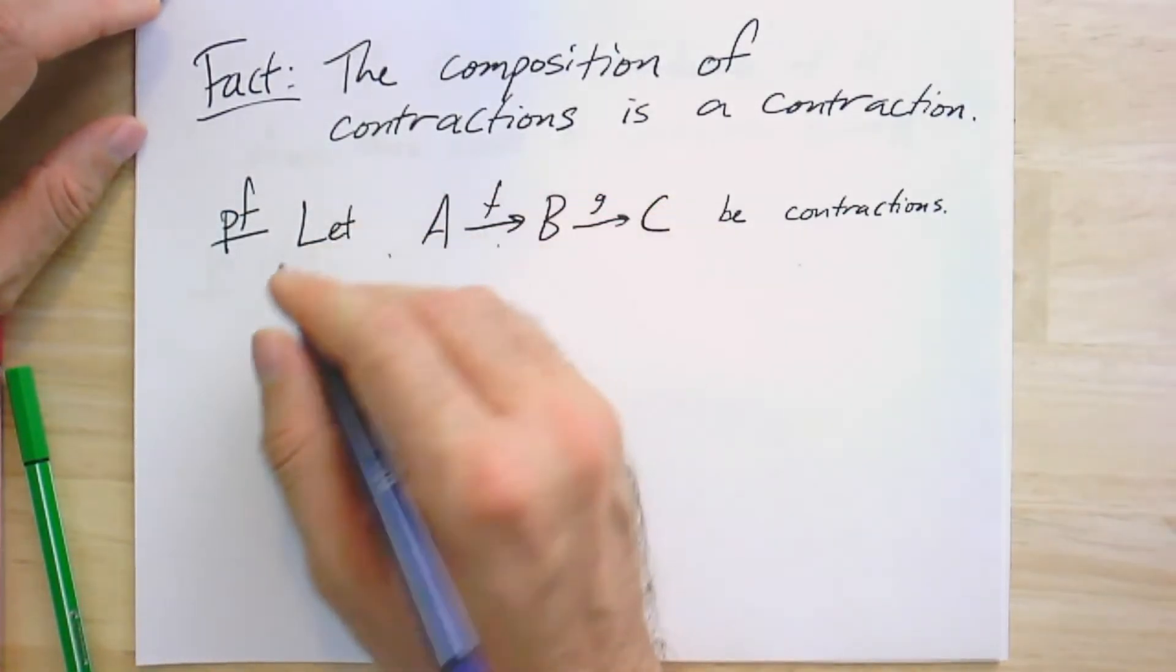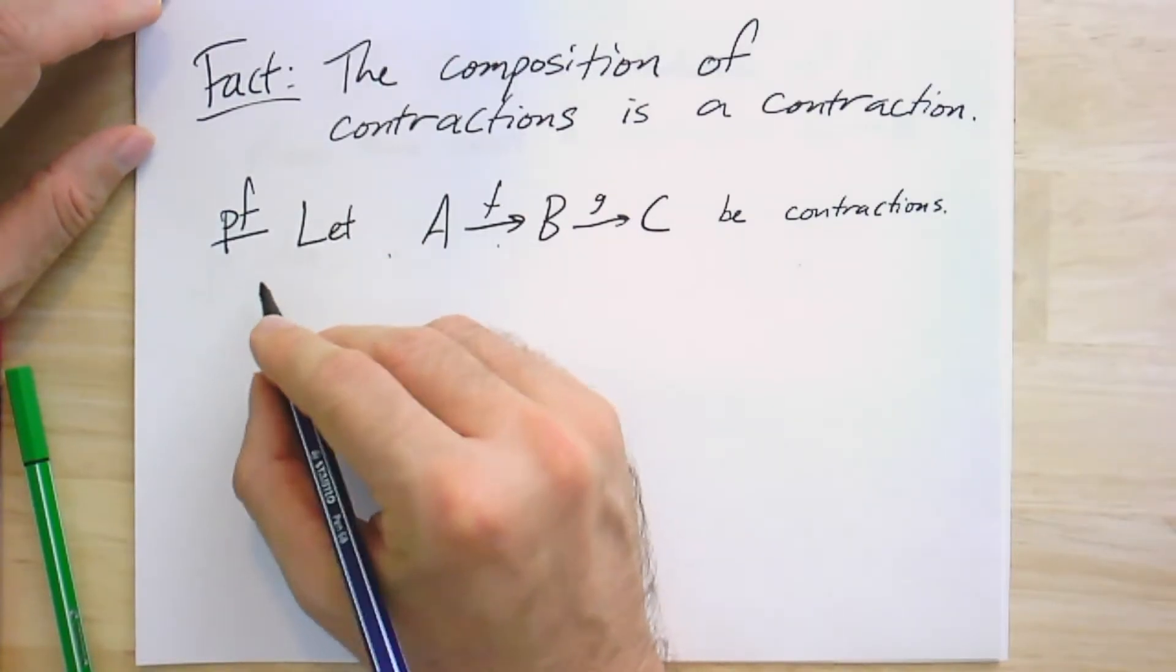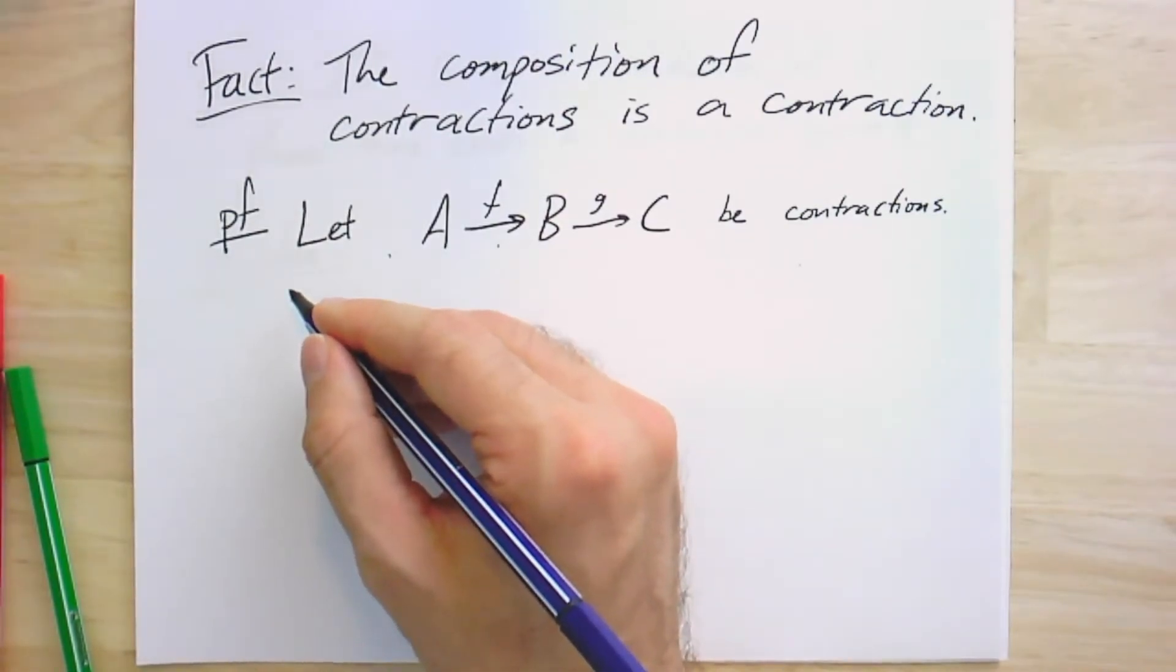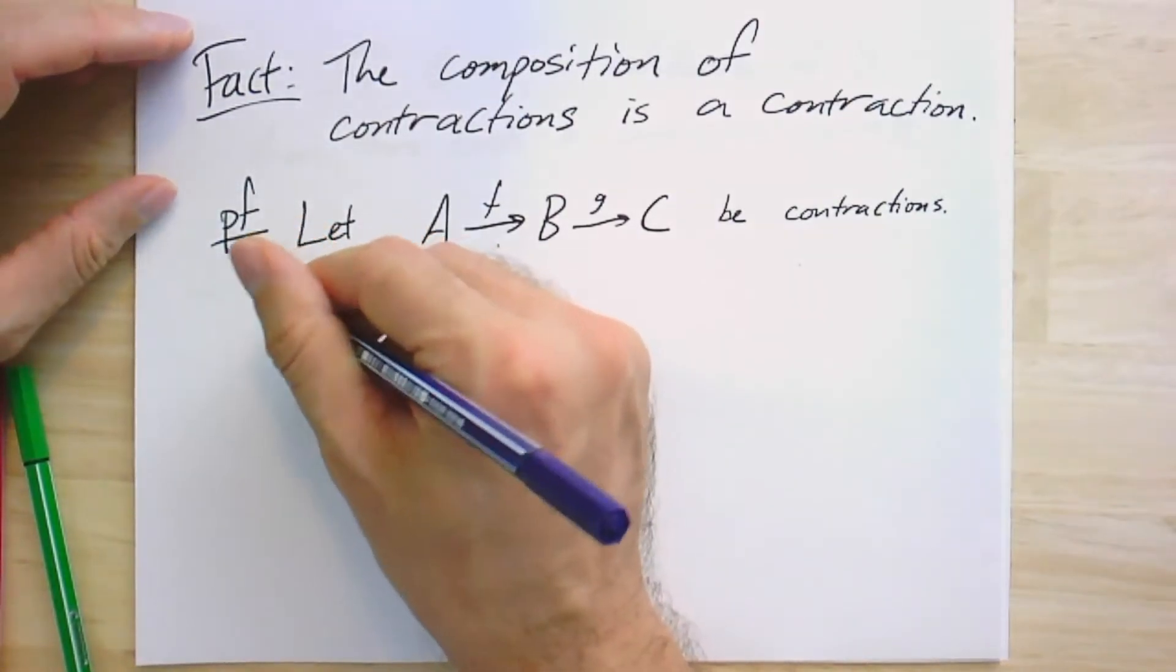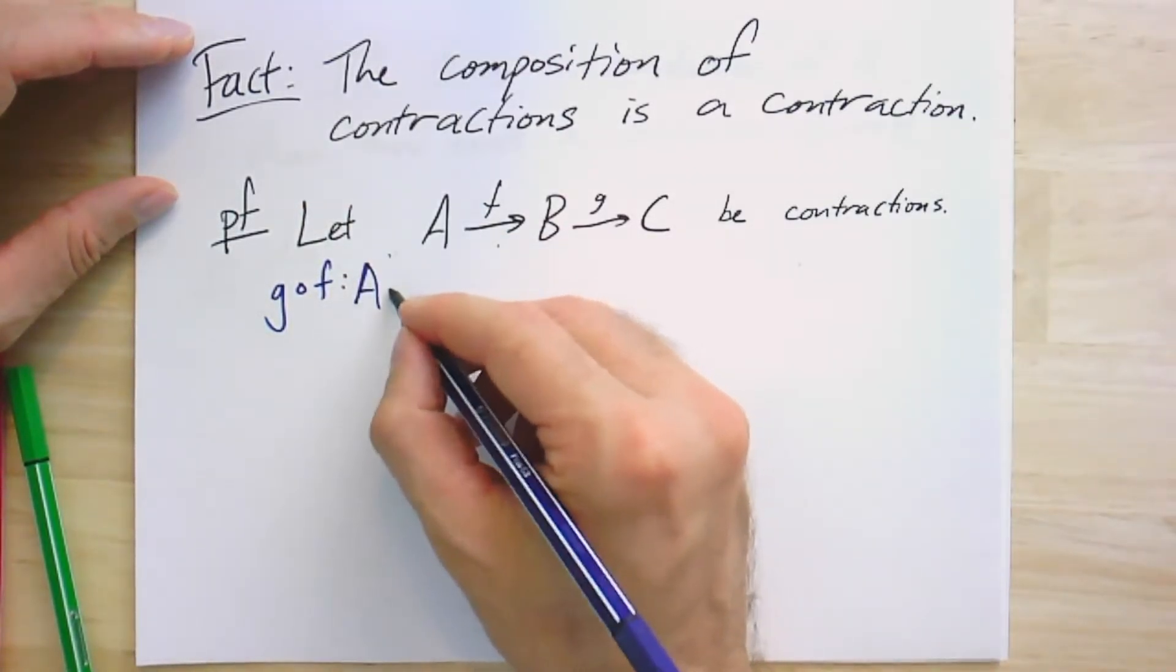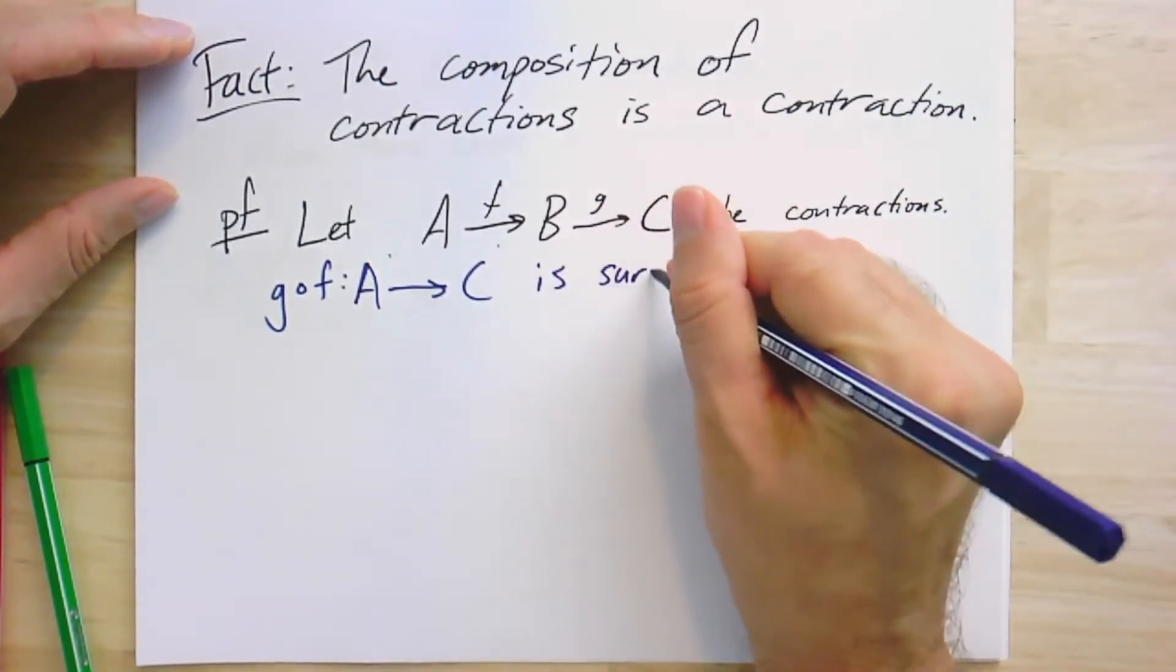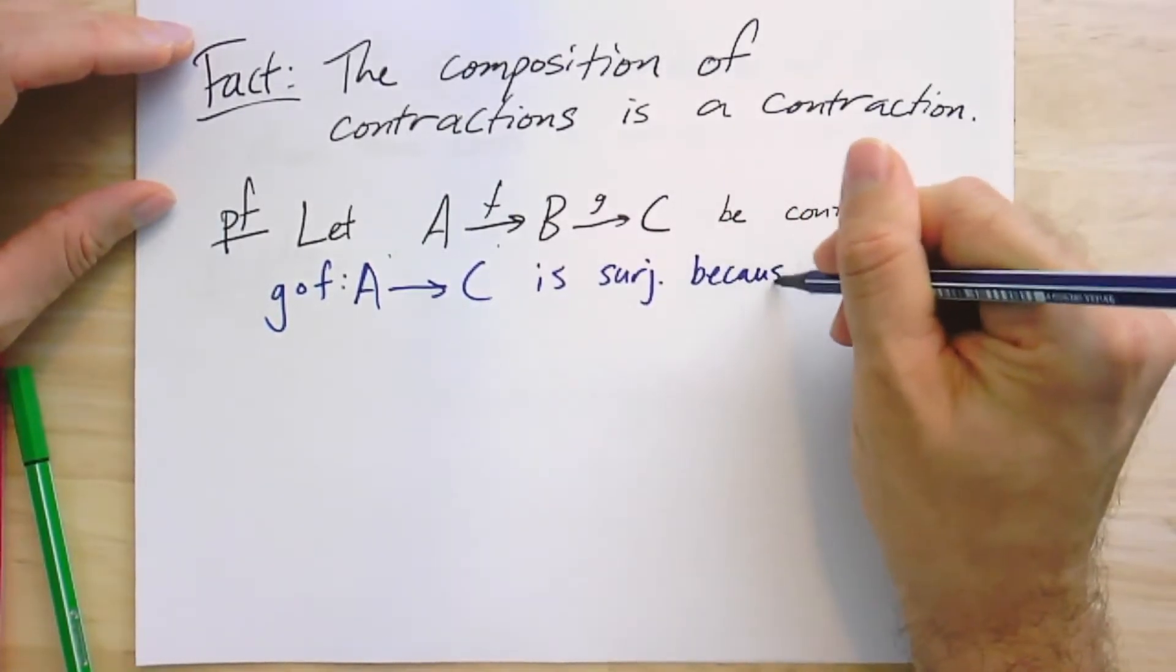So surjective simplicial maps, the composition will also be surjective because the composition is the composition of the functions on the vertices and the functions on the simplices, and the composition of functions, that is, the composition of surjective functions is surjective. So G composed F mapping A to C is clearly surjective because F and G are.